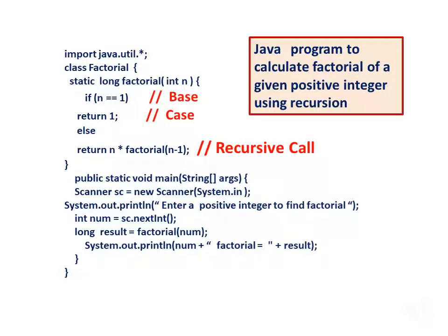Long result = factorial(num). System.out.println(num + " factorial = " + result).